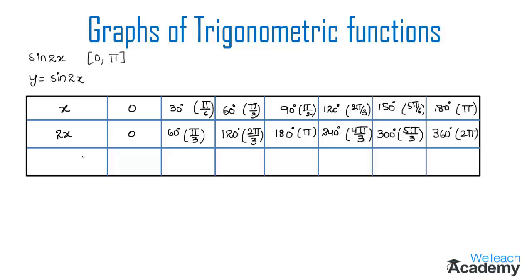In the third row we are going to find the values of y corresponding to different values of 2x in the equation y equal to sin 2x. By substituting 2x = 0 we get y equal to sin 0, and the value of sin 0 is 0. So we get 0 as the value of y.